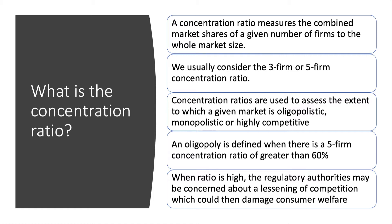We're looking to see the extent to which a market is concentrated in the hands of a few producers. We use the concentration ratio to assess whether a given market or industry is oligopolistic — dominated by a few firms — monopolistic, perhaps dominated by one or two firms, or perhaps highly competitive. An oligopoly rule of thumb: it is defined as when there's a five-firm concentration ratio of greater than 60 percent.